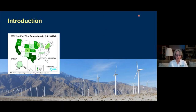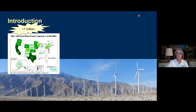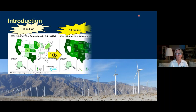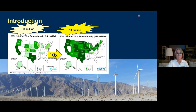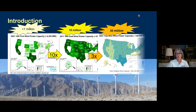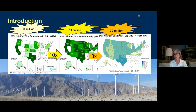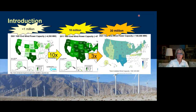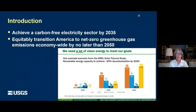Back at the turn of the century in 2001, we had enough capacity installed in the U.S. to power about a million homes. Ten years later, we had increased that tenfold to about 47 gigawatts of capacity. Now in 2021, we've tripled that again to about 140 gigawatts of capacity — enough to power about 25% of the homes in the U.S. Our goals, as stated by the Assistant Secretary for Energy, are to achieve a carbon-free electricity sector by 2035, and net zero greenhouse gas emissions economy-wide no later than 2050.